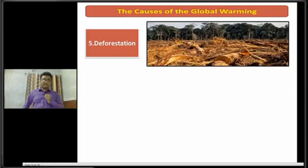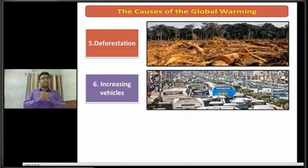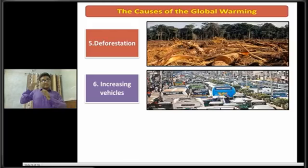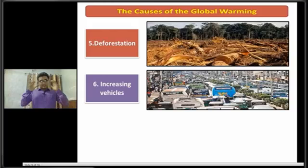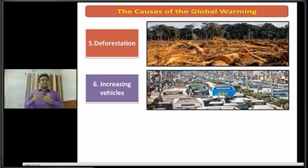Dear students, now I am going to discuss about the next cause, that is increasing vehicles. Due to the needs of the growing population in urban areas, the number of vehicles is being increased day by day, and this huge number of vehicles emits a huge amount of carbon dioxide gas into our atmosphere. So increasing vehicles is one of the causes of global warming.